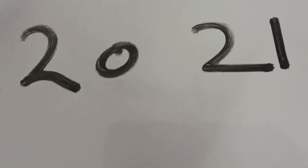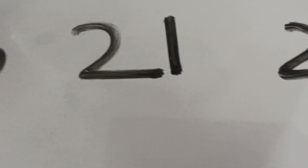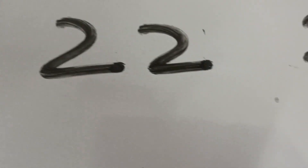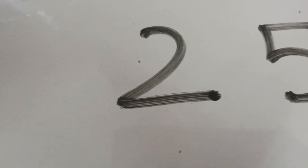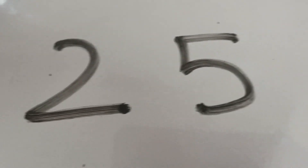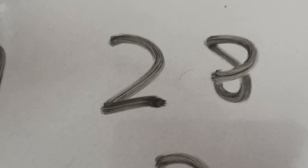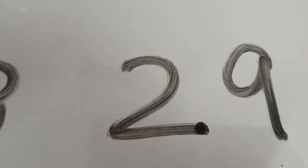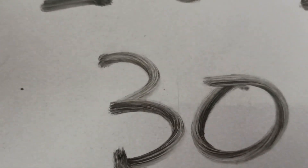So let's revise. After 19 comes 20. Then 21, 22, 23, 24, 25, 26, 27, 28, 29, and 30.